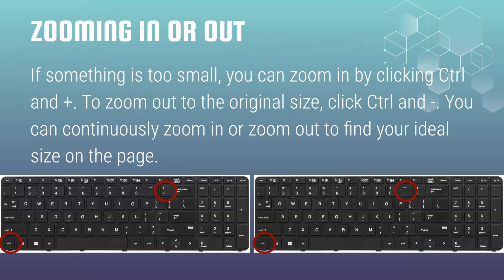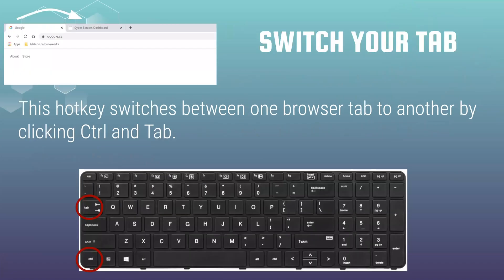Zooming in and out. If something is too small, you can zoom in by selecting control and plus. To zoom out to the original size, select control and minus. You can continuously zoom in or zoom out to find your ideal size on the page. Switching your tab. You can switch your tab by selecting control plus tab, then switch between the different pages or tabs you have open or available.